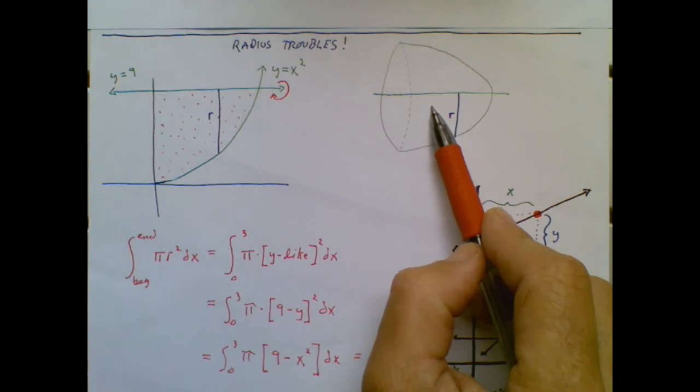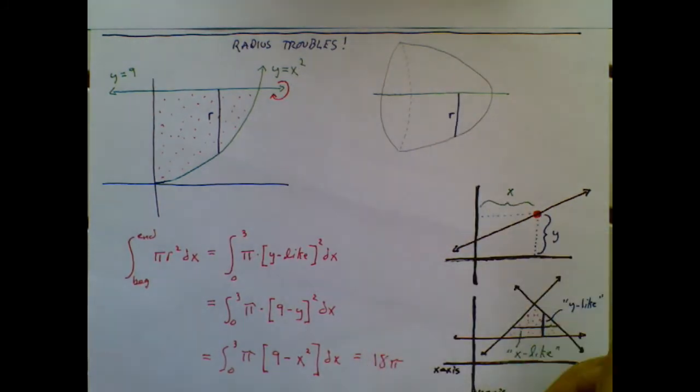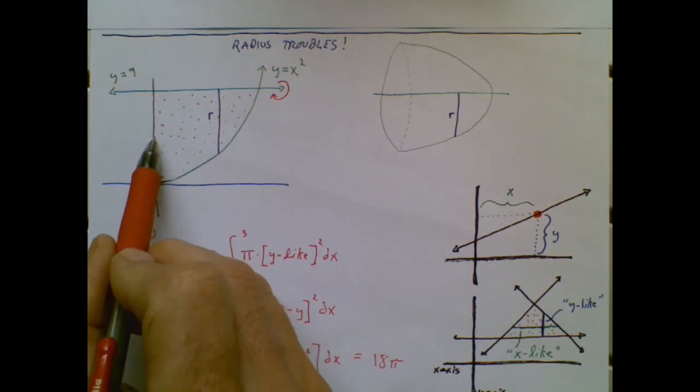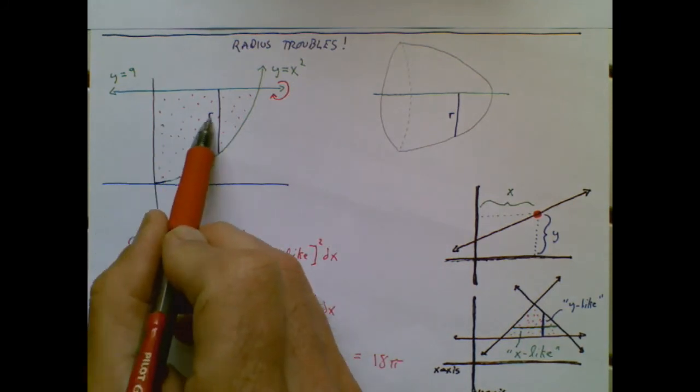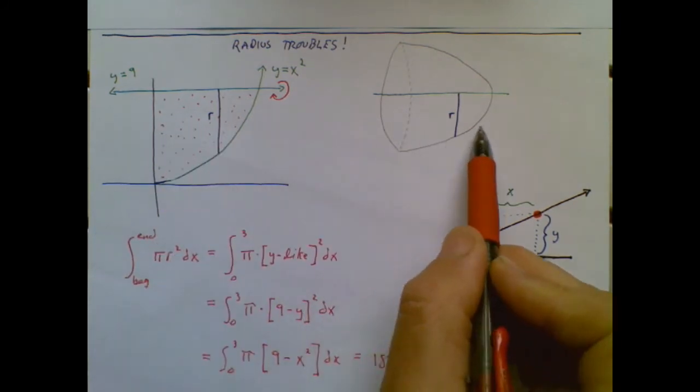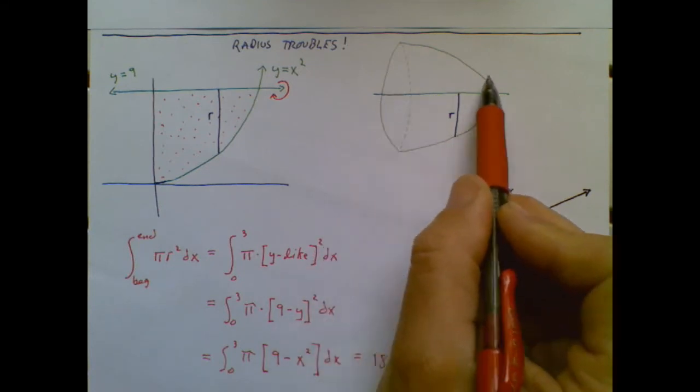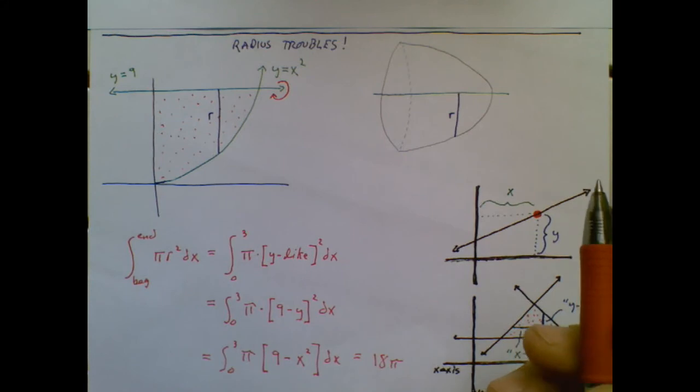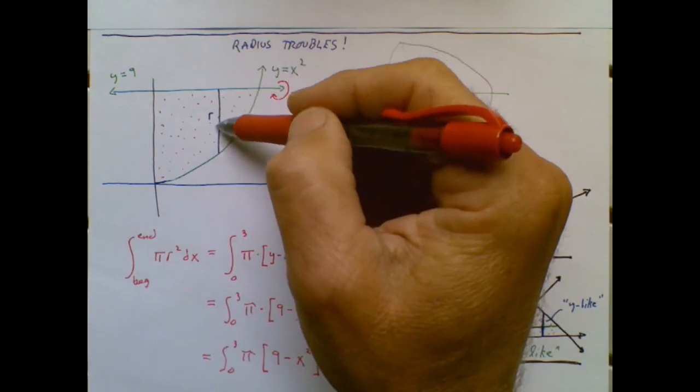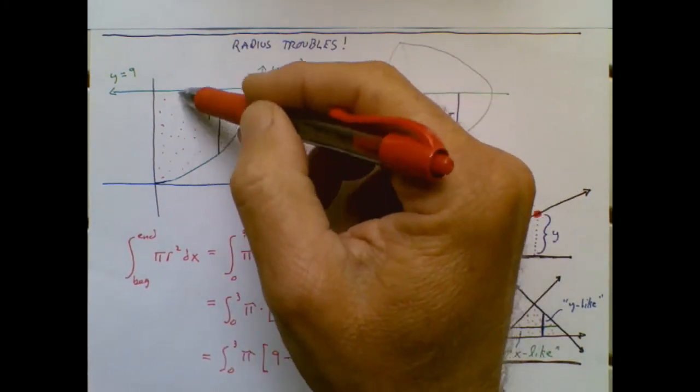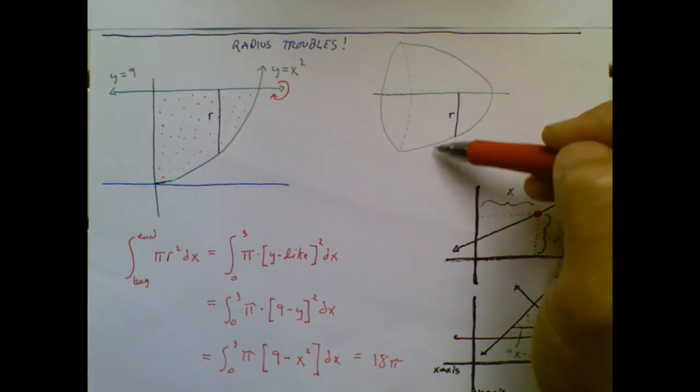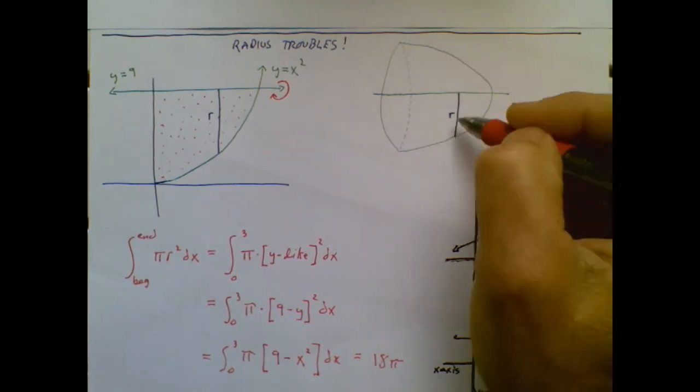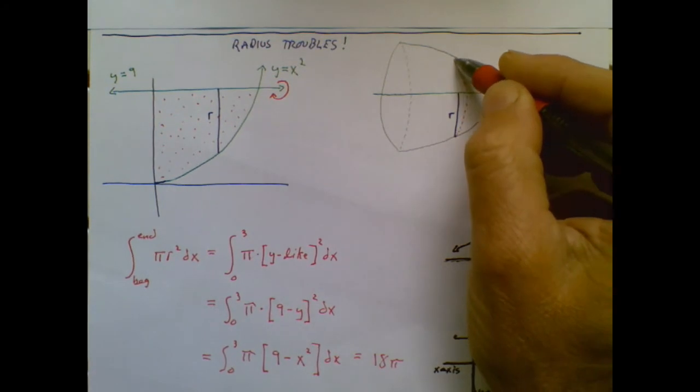The next thing I have to think about is what would be a good slice. Slicing this way, which would show up like this on this figure, that would be bad because any one of those individual slices would not give me a perfect circle. If I slice this way vertically, now I get a perfect circle.